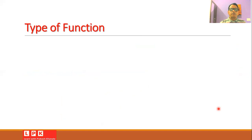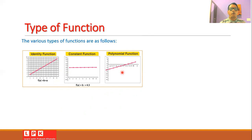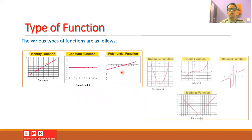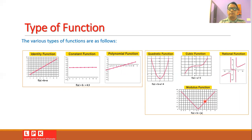In mathematics, there are different types of functions. We can have an identity function where f(a) = a, represented by a straight line. We can have a constant function f(a) = constant, which is a horizontal line. We can also have polynomial functions. A quadratic function such as f(a) = a² − 4 can be drawn as a quadratic curve. A cubic function f(a) = a³ − 5 can be drawn as shown in the diagram. The rational function or modulus function can also be represented graphically.